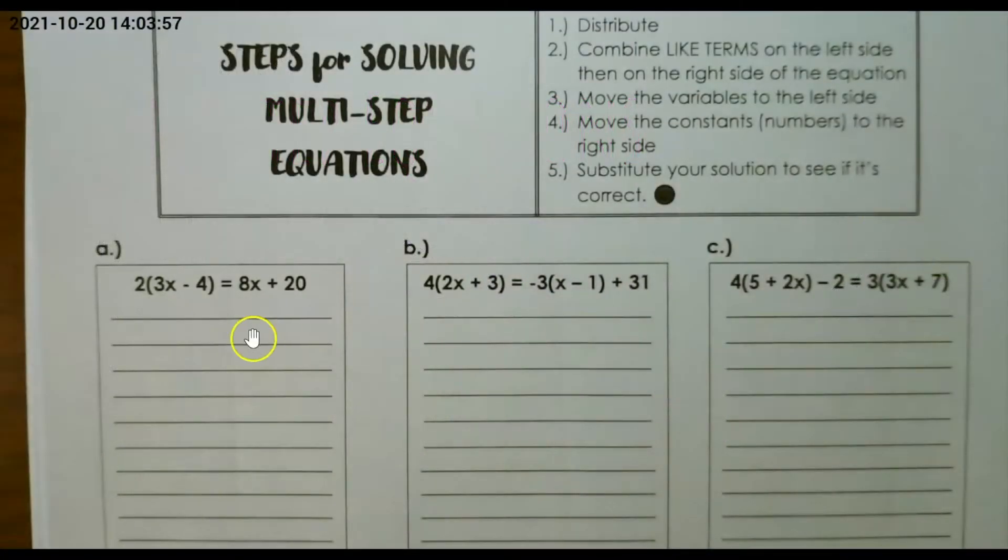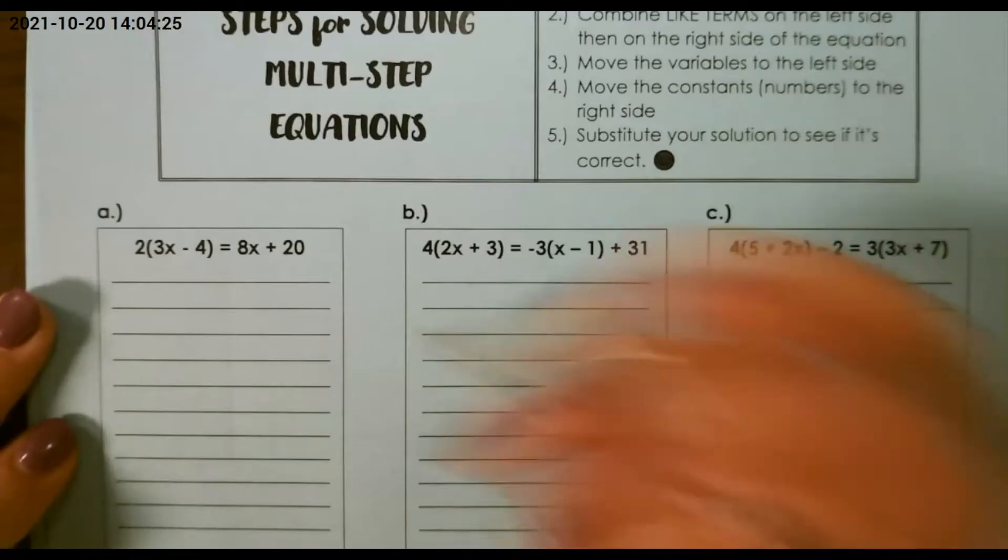Let's solve multi-step equations when we have distributive property. Step one is to distribute, step two is to combine like terms on the left side and then on the right side of the equation, then we move the variables to the left side, then we move the constants or numbers to the right side, then we can substitute our solution to see if we were correct.